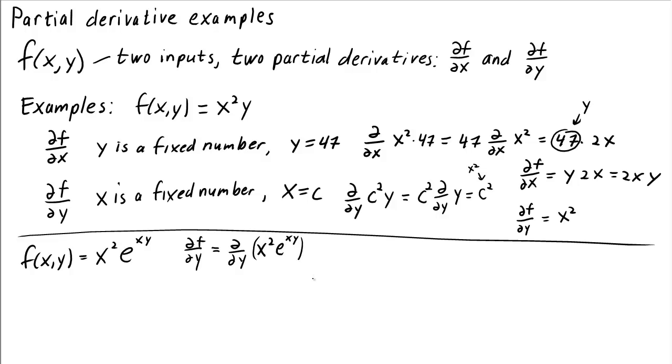df dy is d dy of x squared e to the xy. In this case, we'll leave x as is. We won't call it a number or a different letter. But we'll just remember that it's a fixed number. This means that the x squared can come out of the derivative.